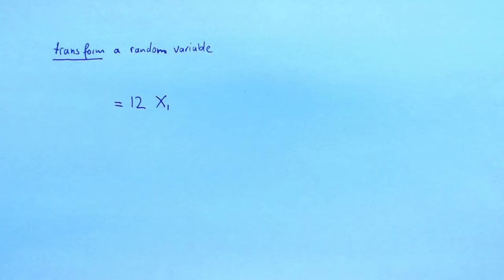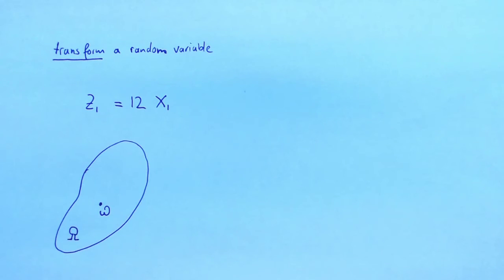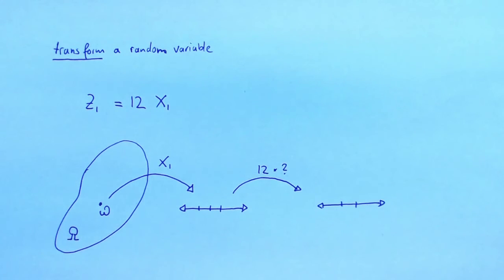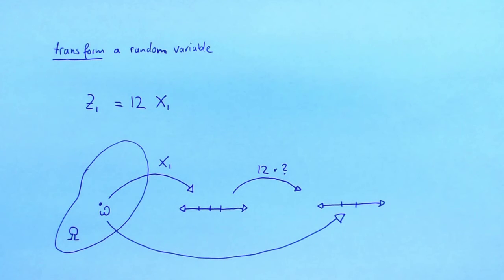Let's call the new random variable Z1. To see that Z1 is also a random variable, note the following. For every sample in our sample space, X1 gives us a number, which we interpret as the age of the first observation in years. We can take that number, multiply it by 12, and get a new number which we interpret as age in months. Just think of this as a way of going from samples to a number — that is exactly the definition of a random variable.